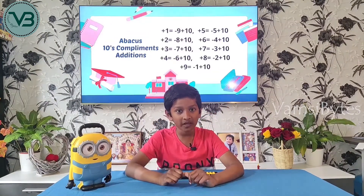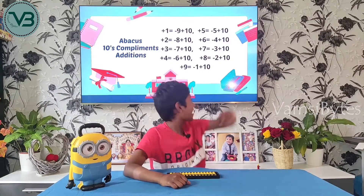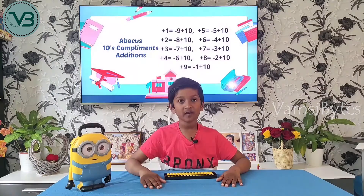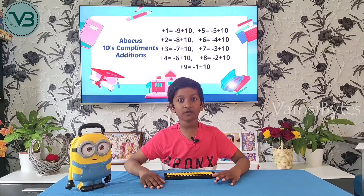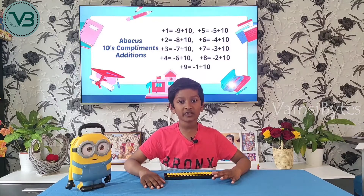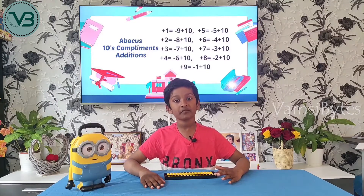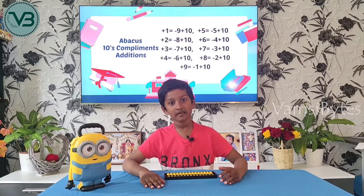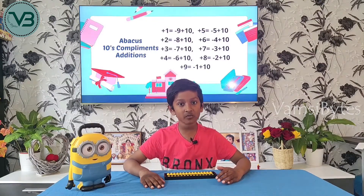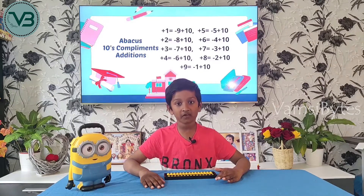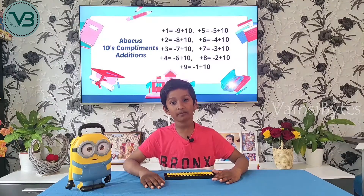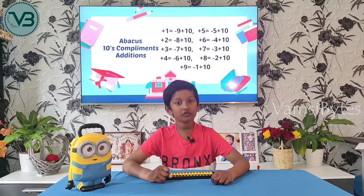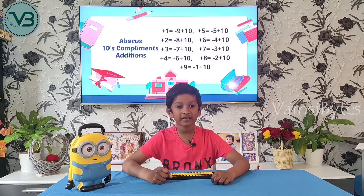Now let me show 10 complements for addition. It always starts with minus. Plus 5 is equal to minus 5 plus 10. Plus 6 is equal to minus 4 plus 10. Plus 7 is equal to minus 3 plus 10. Plus 8 is equal to minus 2 plus 10. Plus 9 is equal to minus 1 plus 10.